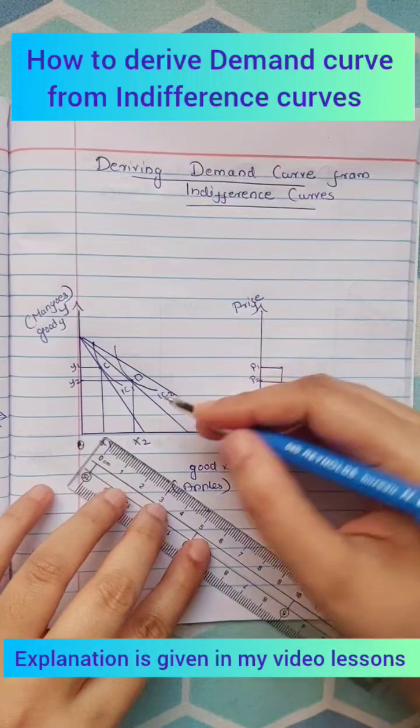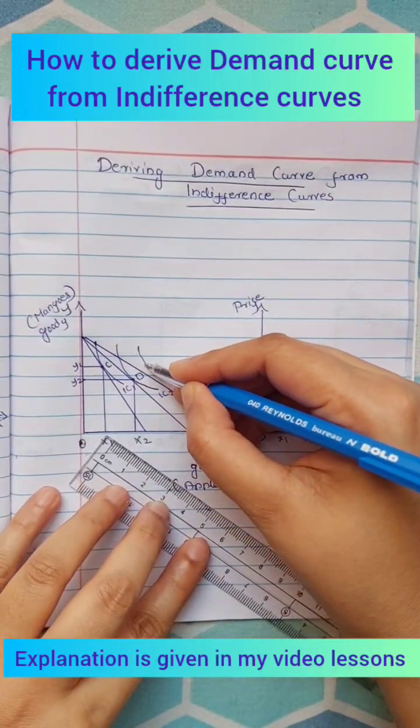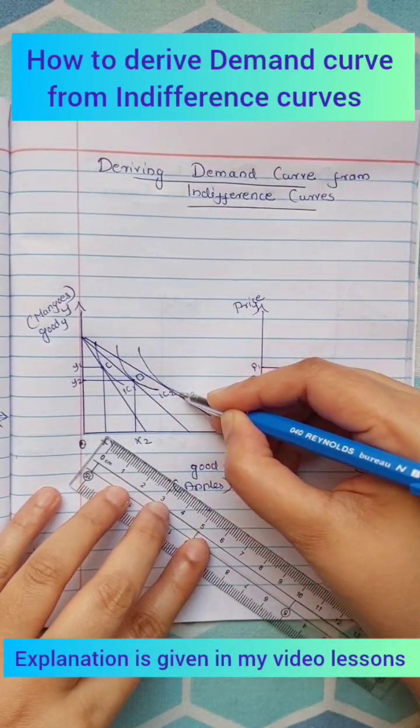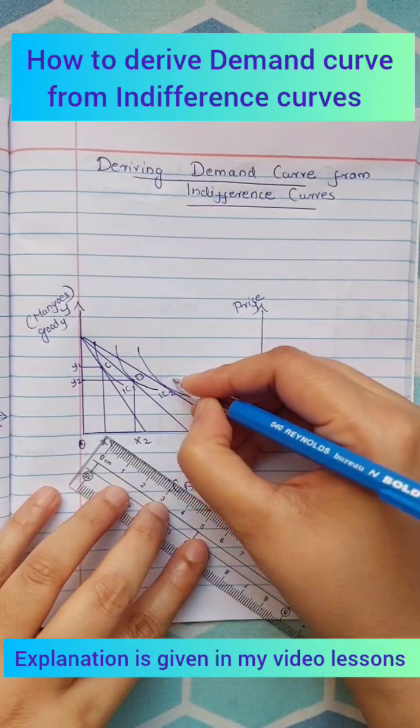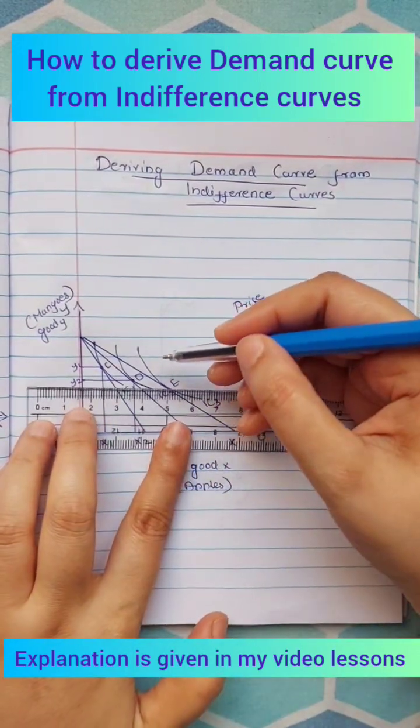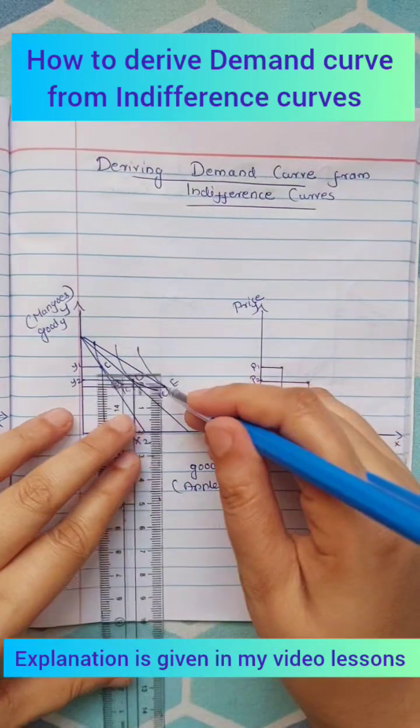we will get a new budget line and new equilibrium point will be E, where she buys x3 quantities of apples and y3 quantities of mangoes.